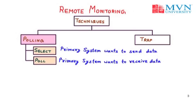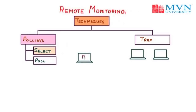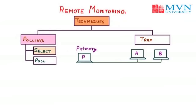To understand these functions, let us take an example. For the select function, suppose we have three systems: P, which is our primary system, and two secondary systems A and B. They are connected with the primary system using bus topology. We will draw the timeline for the primary system and the secondary systems to show the communication between the primary and secondary devices.